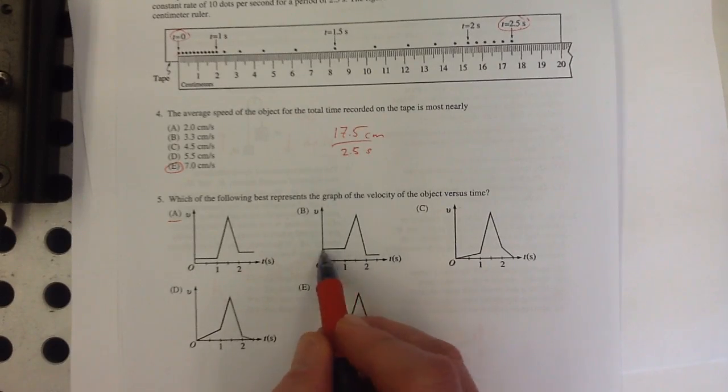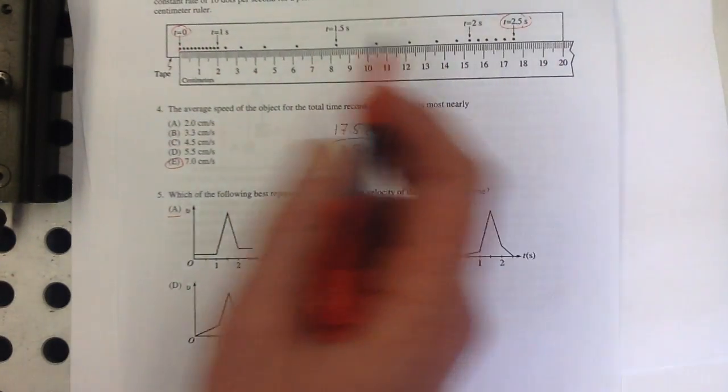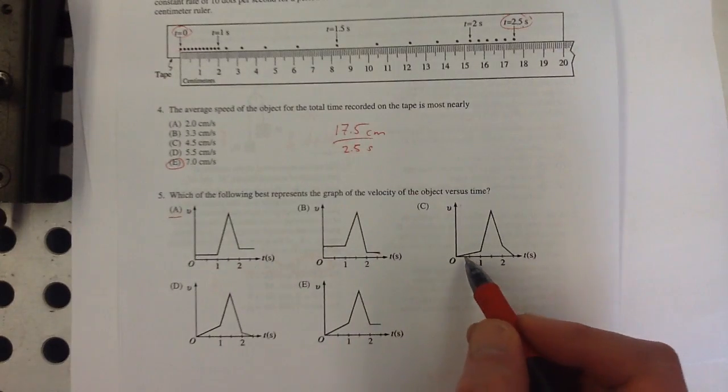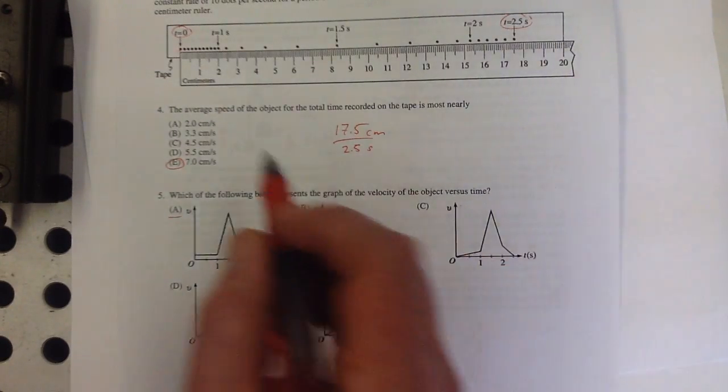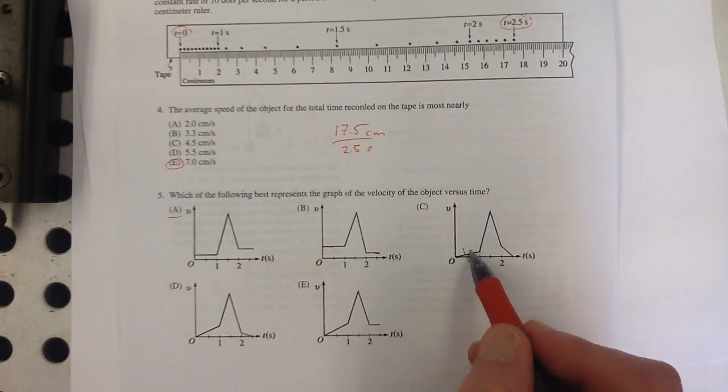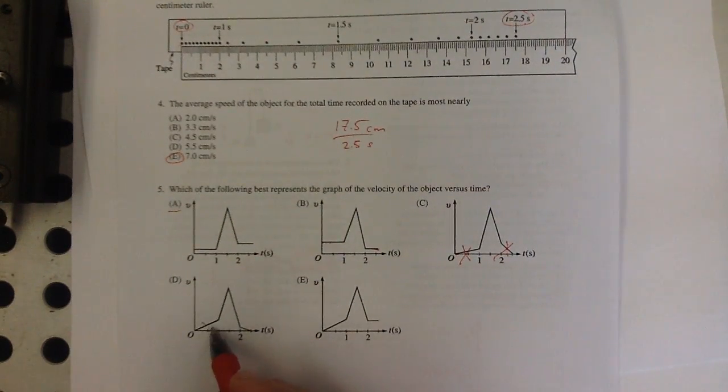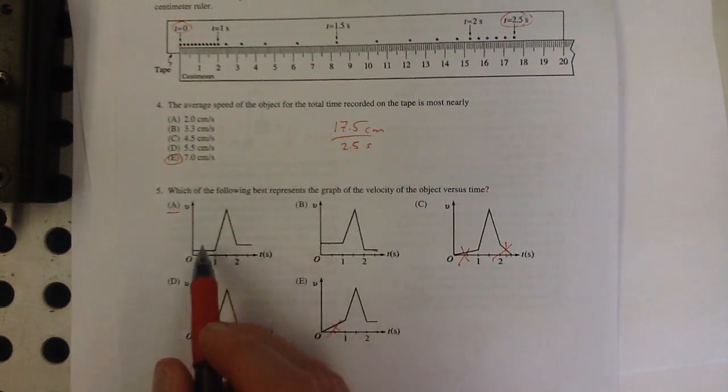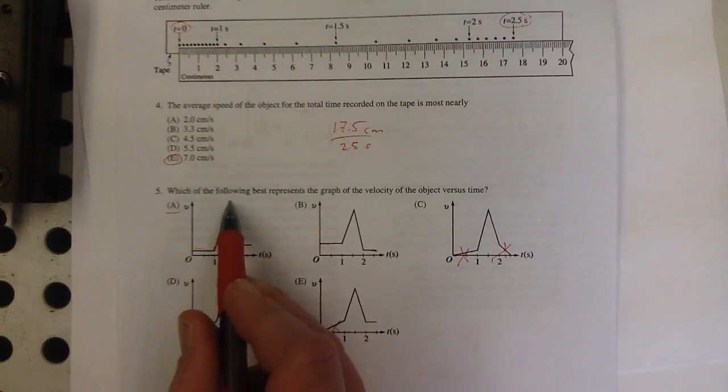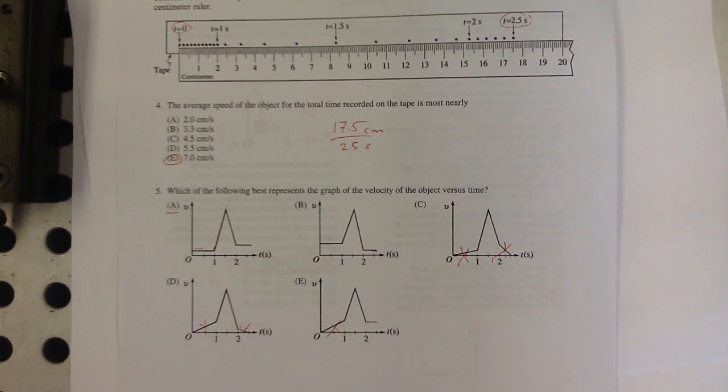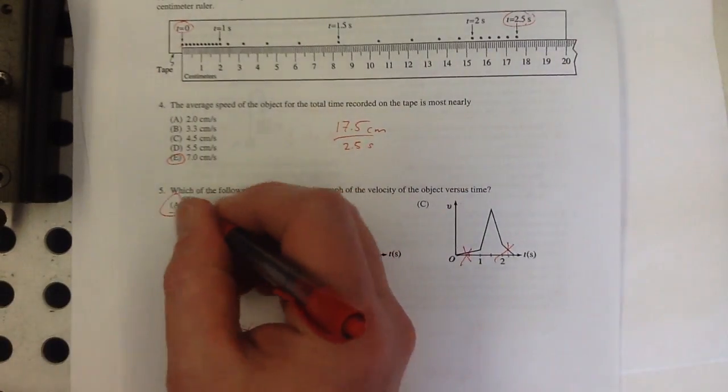This is close, but it has these two bits backwards. This would be accelerating, and the dots are evenly spaced, so it can't be accelerating in those bits. So same problem here, same problem here. So constant velocity, acceleration, acceleration, constant velocity. So A is correct.